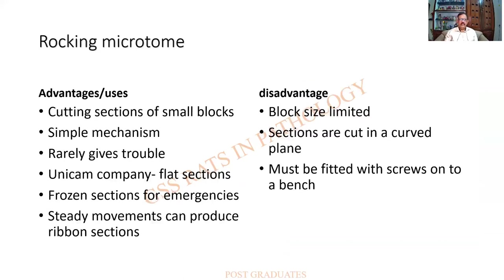Advantages of the rocking microtome: you can cut sections of small blocks and sometimes larger blocks also. The mechanism is simple and it rarely gives mechanical trouble. Unicam is another company that designed a version, used for flat sections — the Cambridge version produced slightly arc-shaped sections, whereas this one is flat. Frozen sections could also be cut through this for emergencies.